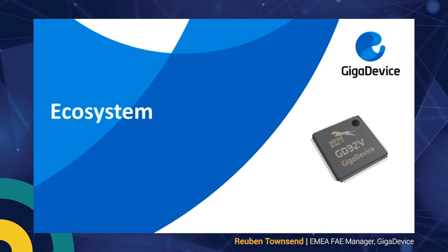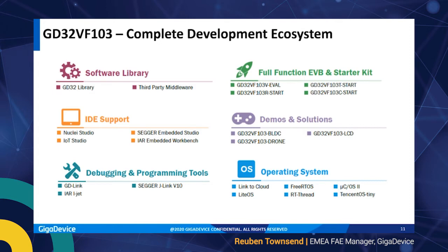Looking at the ecosystem — although the MCU itself is relatively new, there has been a huge increase in support tools, not only from GigDevice but also from third-party companies. These include software libraries, IDEs for design and development, programming tools, debugging tools both hardware and software, evaluation boards and starter kits. On the software side there are also lots of examples, demos, tutorials, and code demonstrations using the MCU resources.